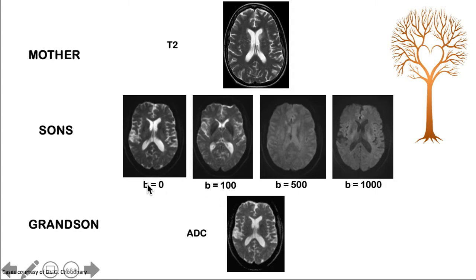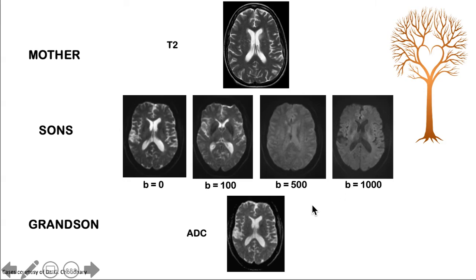Looking at increasing B values, there is one most similar to T2, and that is the B0. As one increases the B value, freely moving water — here inside the ventricles — will reduce its signal, as seen here in the CSF.